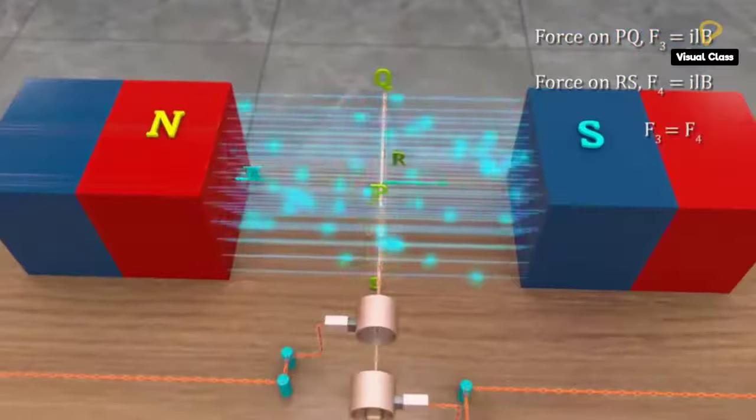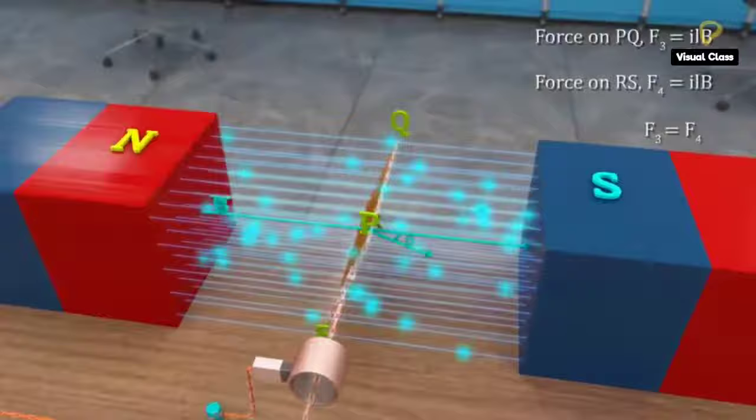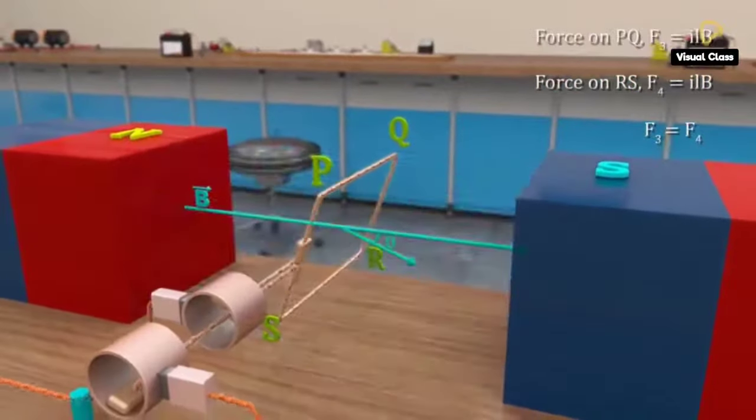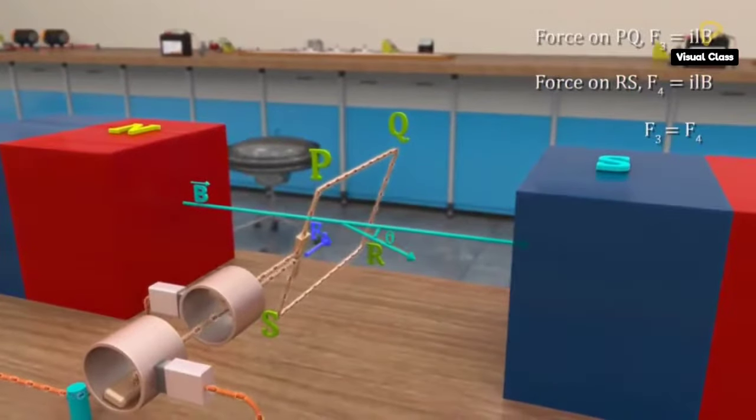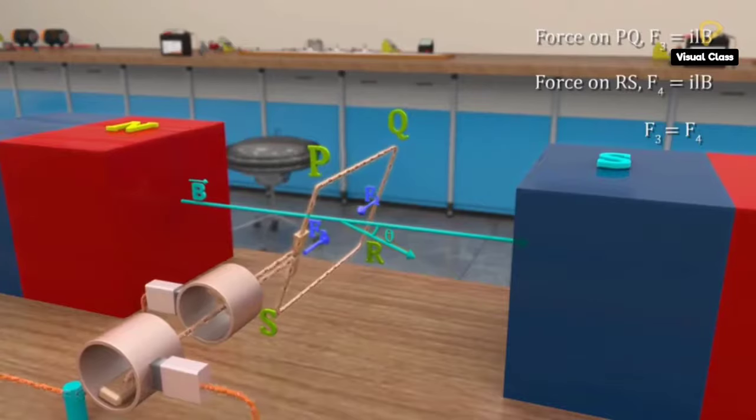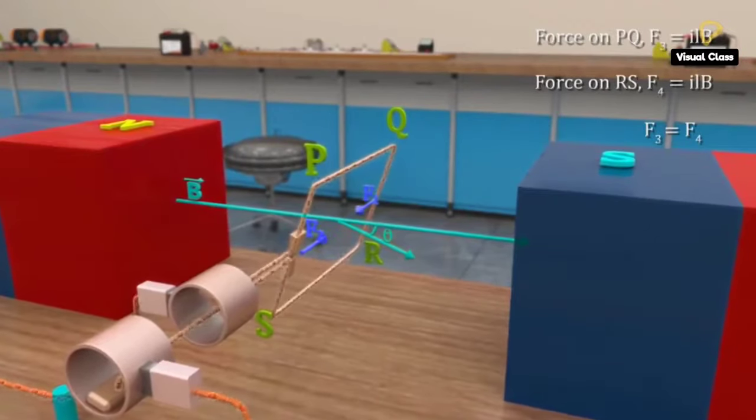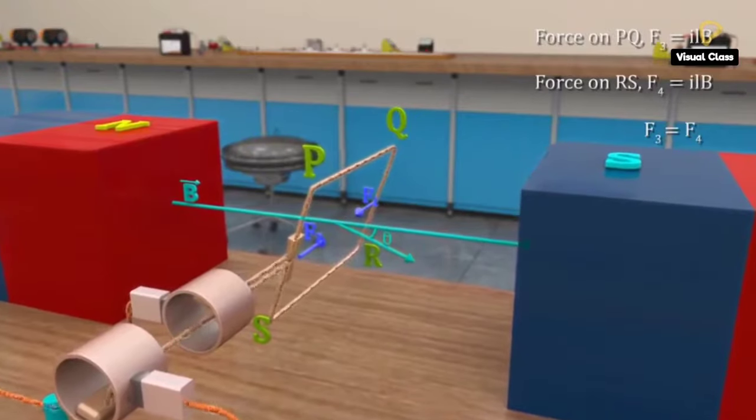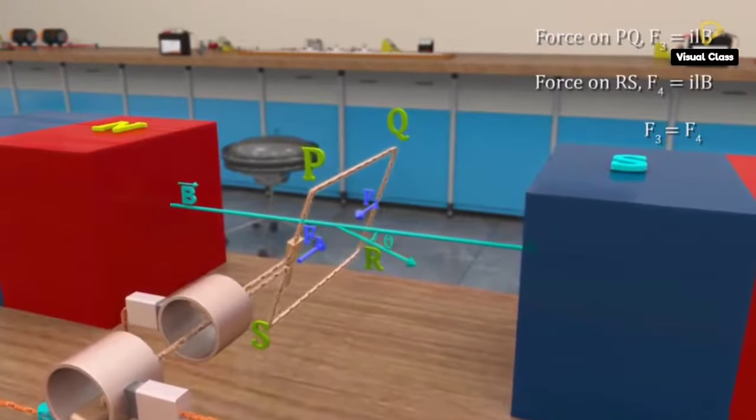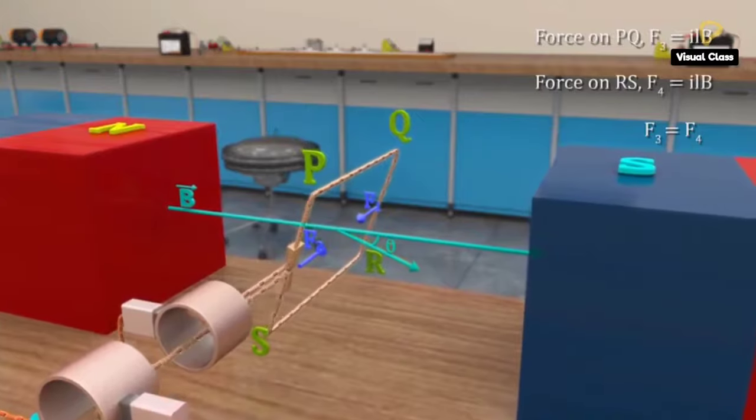Now, let the loop's normal make an angle theta with the magnetic field. Forces on SP and QR are equal and opposite to each other and they have the same line of action. Hence, they produce a net force equal to zero and net torque also equal to zero.